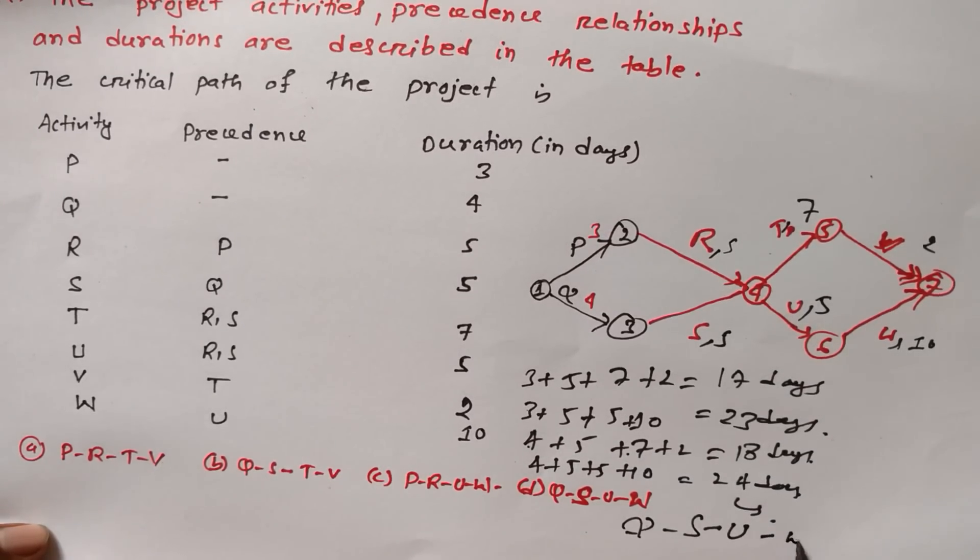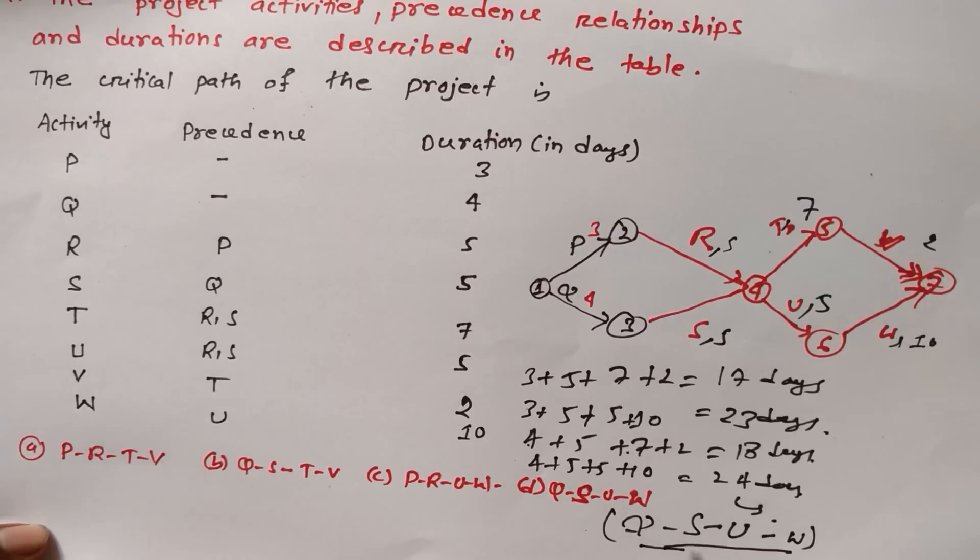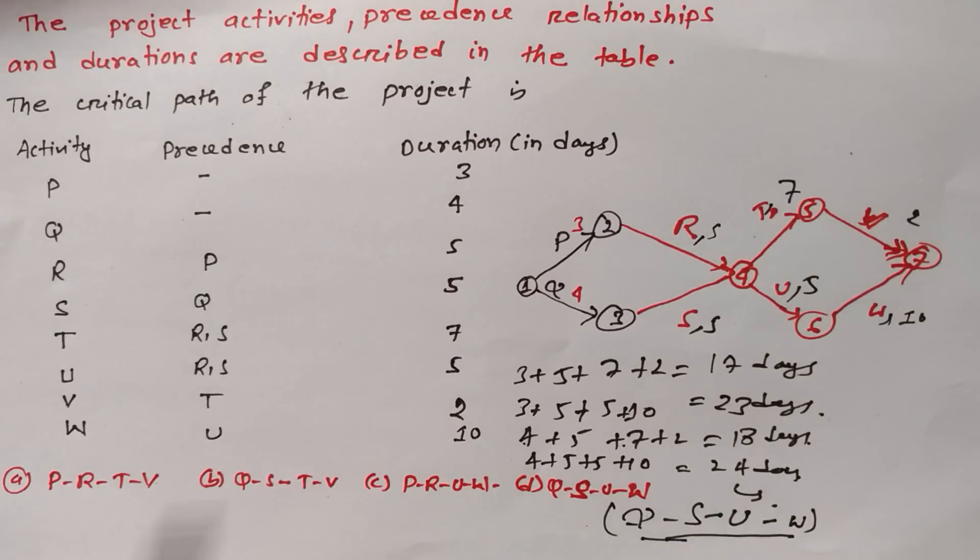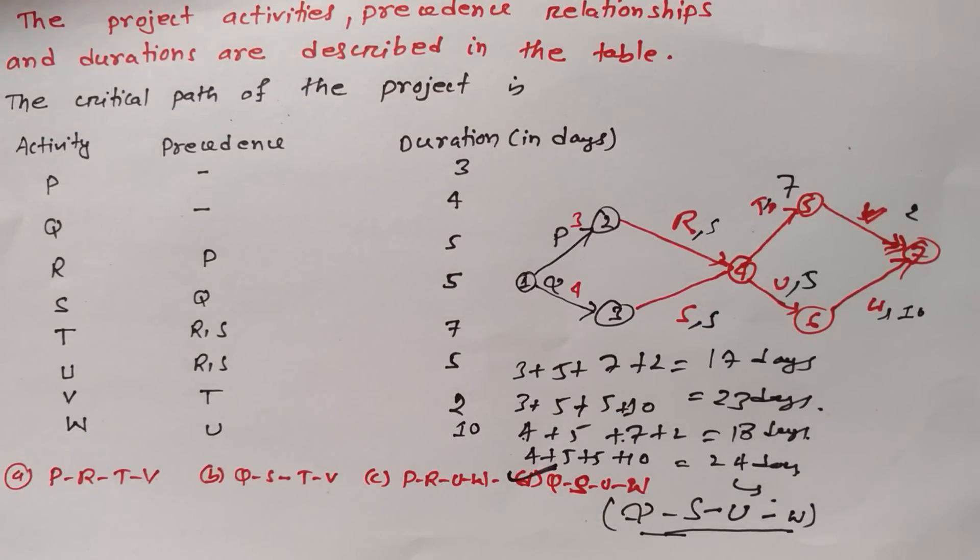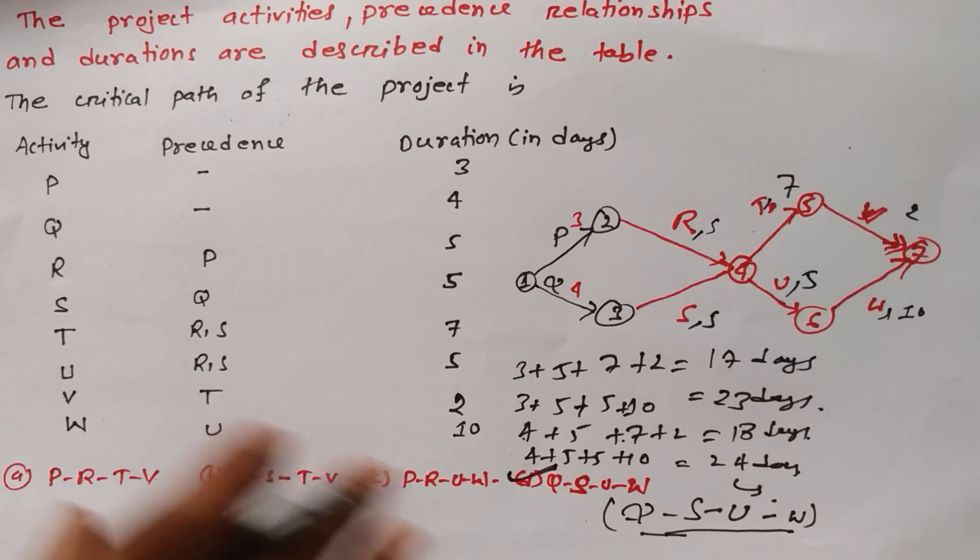Which is taking 24 days - Q, S, U and W. We have to now find out which option is providing this one. First one P-R-T-V, no. This one Q-R-T-V, no. This one P-R-Q-W, no. This one Q-S-U-W, so we have to mark option D as the right answer for this question.